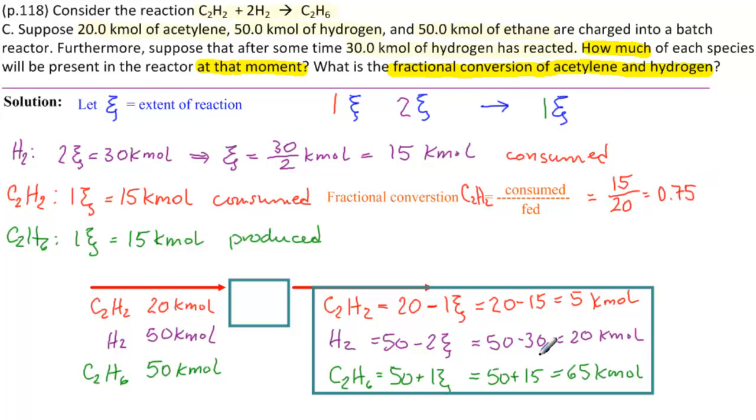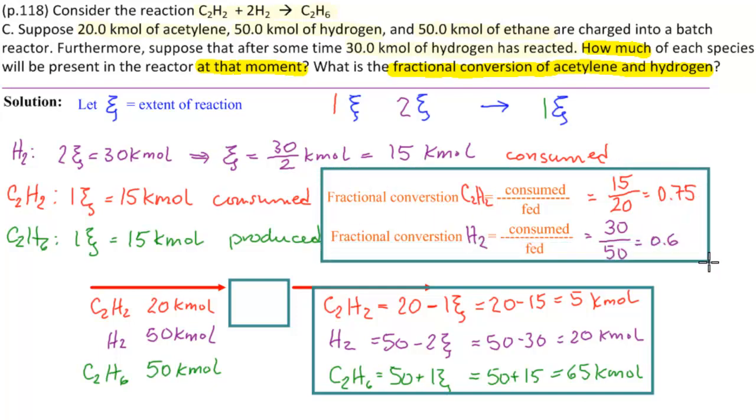And the fractional conversion of H2 is, what was consumed is 30, over what was fed is 50. So that's 3 fifths, or 0.6. So this is the answer to the second part of the question.